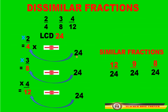Let us start. 24 divided by 4 equals 6, multiplied by 2, the answer is 12. Then 24 divided by 8 equals 3, multiplied by 3, the answer is 9. Then the last one: 24 divided by 12 equals 2, multiplied by 4, the answer is 8. So as you can see, we now have similar fractions: 12 twenty-fourths, 9 twenty-fourths, and 8 twenty-fourths.